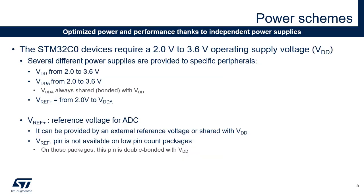The main power supply VDD ensures full feature operation in all power modes from 2 up to 3.6V. Device functionality is guaranteed down to 2V, the minimum voltage after which a power-down reset is generated. The analog power supply VDD-A is always connected to VDD. VREF+ is the analog peripheral input reference voltage and must be between 2V and VDD-A. It can be grounded when the analog peripherals using VREF+ are not active. On packages without a VREF+ pin, VREF+ is internally connected with VDD.